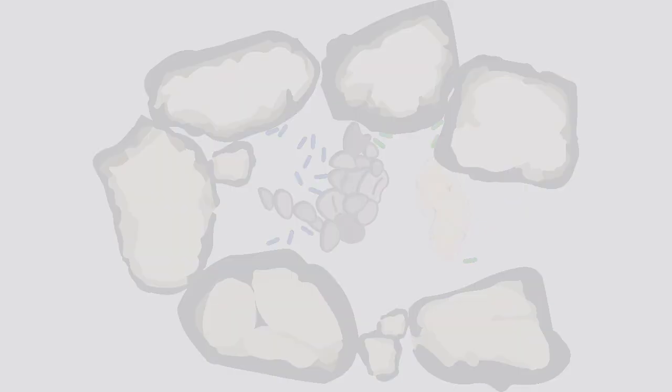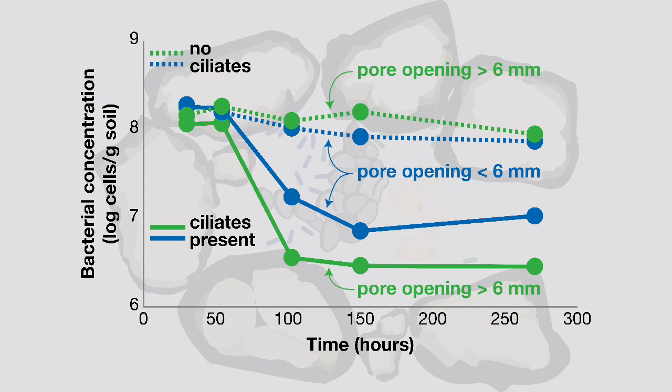This can be seen in the figure where the bacterial cell numbers in the outer pore decrease more than those in the protected inner pore once the ciliate enters the larger outer pore.